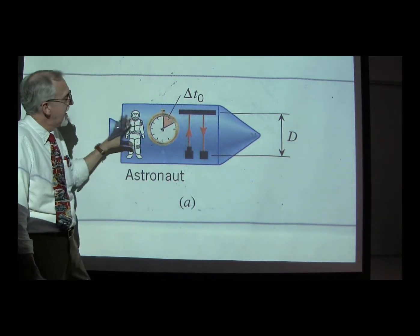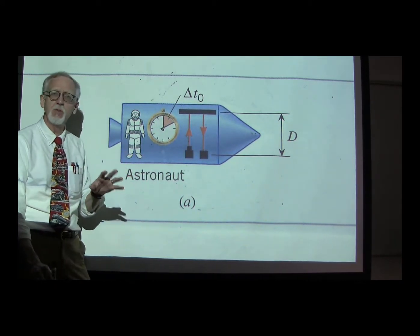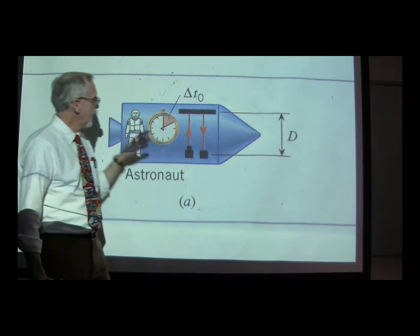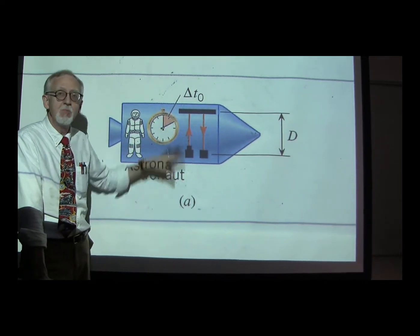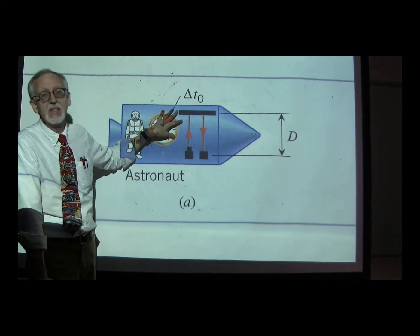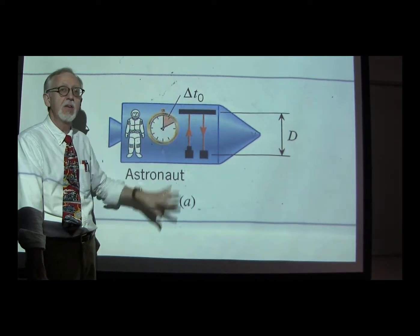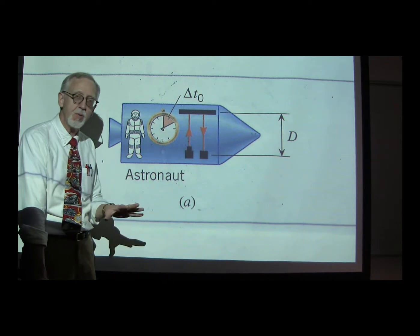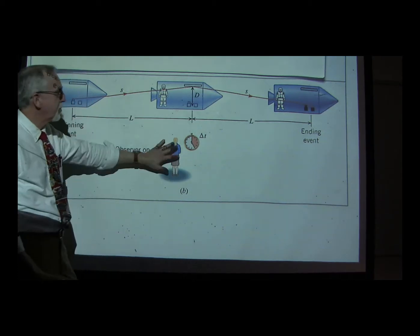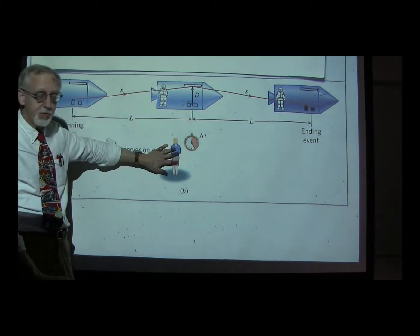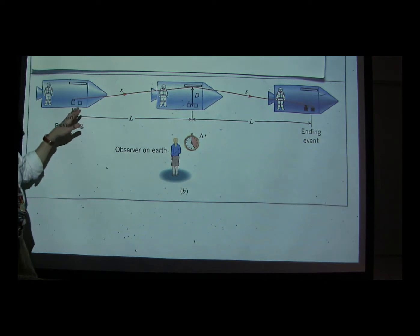Now let's imagine that this rocket is moving relative to another reference frame. Which one is really moving and which one is really stationary? We can't say that. This astronaut is stationary with respect to the rocket's reference frame. Another frame is moving relative to the rocket — let's call it the Earth. The Earth thinks the Earth is stationary and the rocket is moving; the rocket thinks the rocket is stationary and the Earth is moving. All we can say is that there is another reference frame moving relative to the rocket. So here we have an observer on the Earth's reference frame, and here is the rocket moving by relative to the Earth.